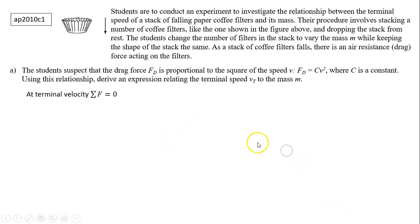Students suspect that the drag force Fd is proportional to the square of the speed v, such as Fd equals c times v squared, where c is constant. Using this relationship, derive the expression relating the terminal speed vt to the mass m. First, let's think about terminal velocity. At terminal velocity, velocity is constant. At that time, acceleration equals zero, which means net force equals zero.